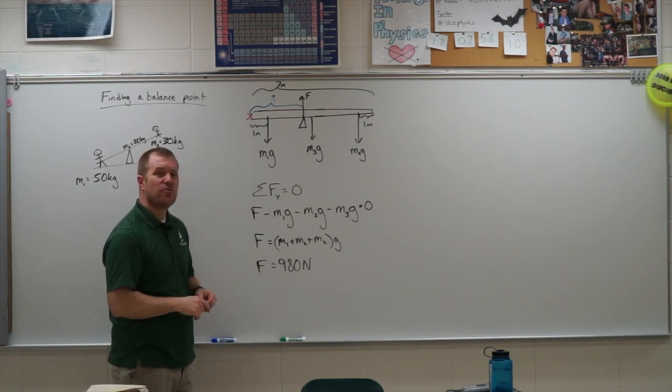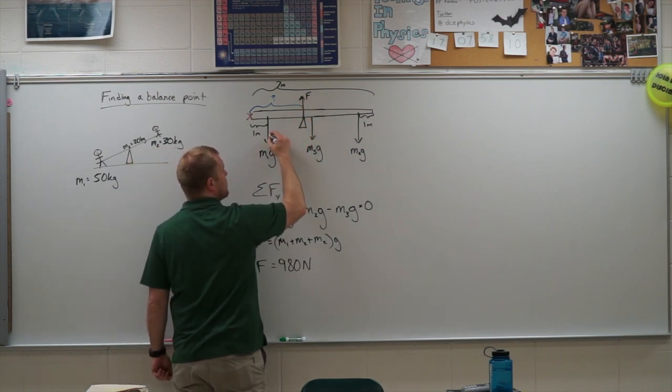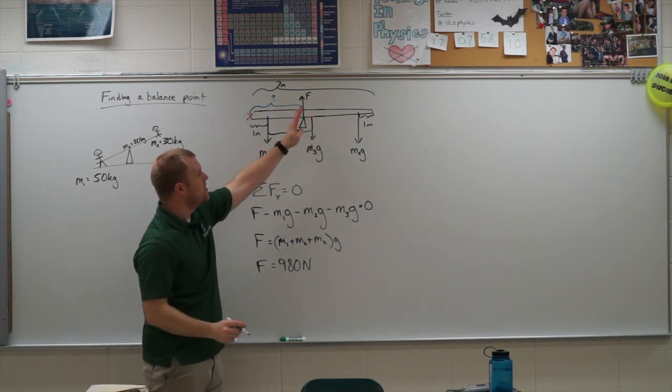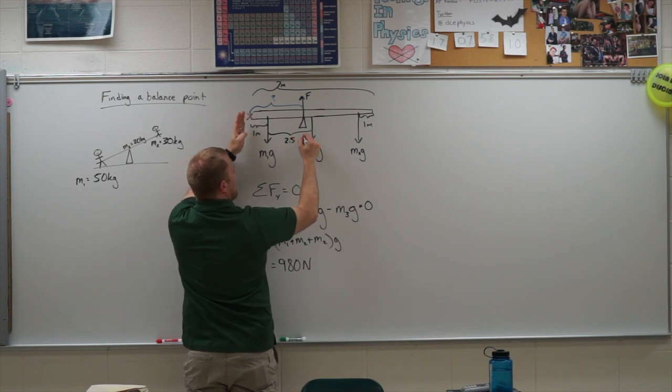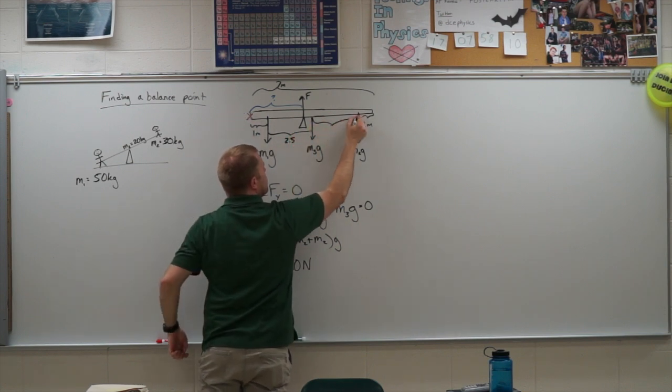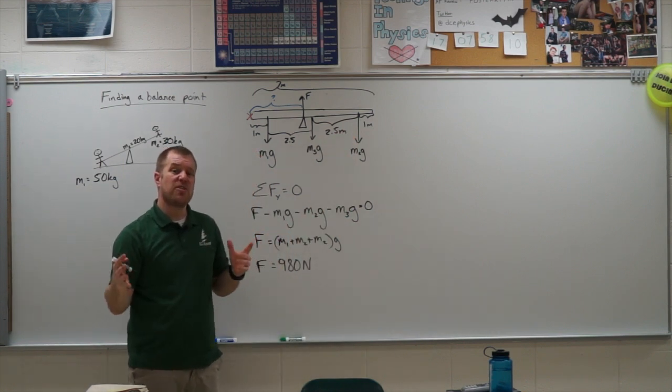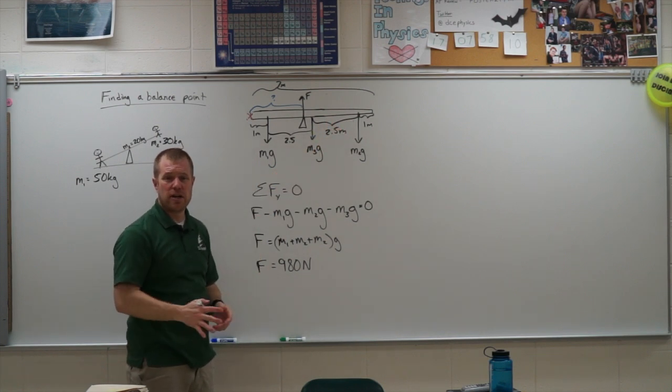Now, the other thing I need to do for my torque equation is I need to know all my distances. Now, I don't know where this force is, so I'm just going to ignore it for now. The whole thing is seven meters long. So that means this is 3.5 to the center. So this is 2.5 and 2.5. Now, the reason I do this is it's going to help me figure out the distance from the axis of rotation to each of these forces to set up my torque equation.